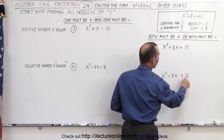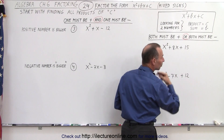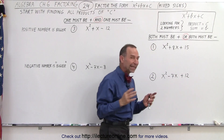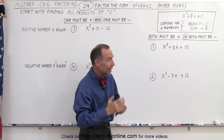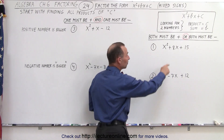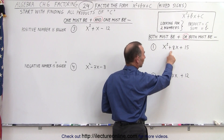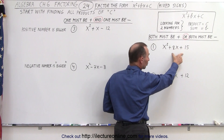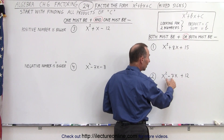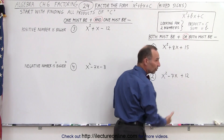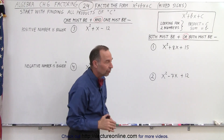When the third term is positive, both numbers we're looking for must either be positive or negative. What determines which way it is, is the middle term. If the middle term is positive, then both numbers must be positive. If the middle term is negative, then both numbers must be negative. That's how you decide.